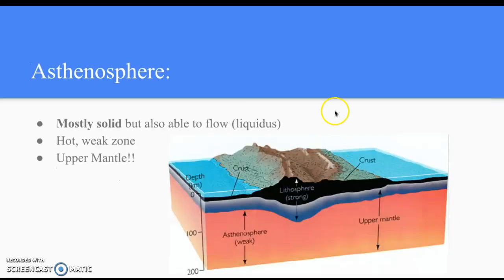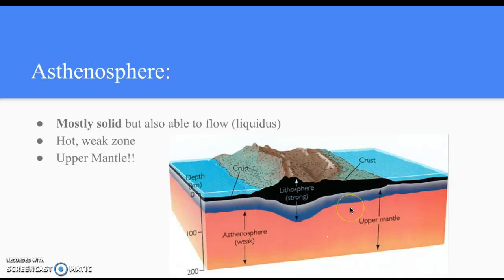The asthenosphere is mostly solid but it's able to flow — we call that liquidus. It is a hot, weak zone and it represents the upper mantle.